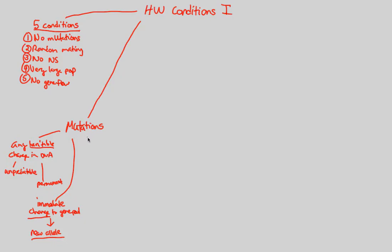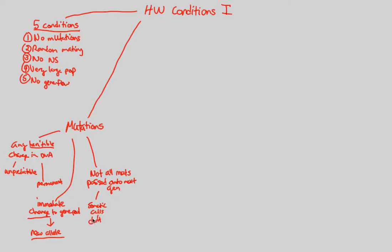Another idea about mutations that is often misunderstood is that not all mutations are actually passed on to the next generation — it's not a guarantee. That's why hereditable is a key word here. Sometimes somatic cells don't pass on mutations. If you have a mutation in your skin cell, that skin cell will not be passed on — it's not a gamete, not a sperm or egg cell. Thus it will not be inherited, and a somatic cell mutation will not cause a problem to the offspring.